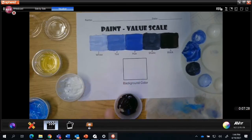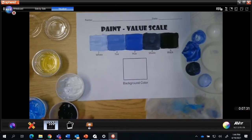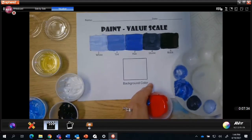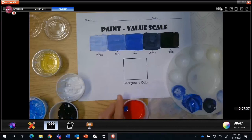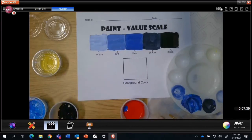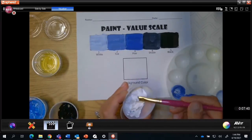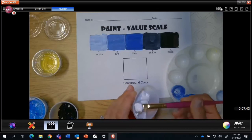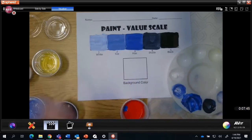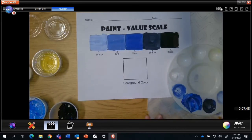The next thing I need to do is decide what color I'm going to use for my background. I decided I want to use a pink color. So I'm going to start with my white because that's my lighter value.